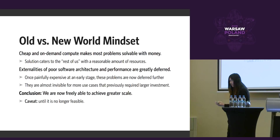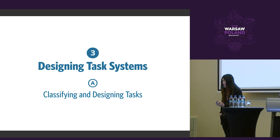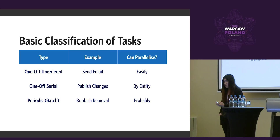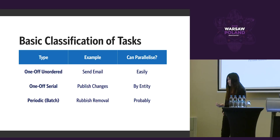Now I'll talk about the actual design of task systems. The first thing is to classify and design tasks with what we've learned. In web applications, tasks are generally either one-off or periodic. One-off means it runs once; periodic means it runs periodically. One-off tasks can be unordered or serial. A one-off unordered task — for example, sending a notification email when an order is placed — doesn't matter if the order is cancelled later; the task runs according to the arguments given at creation time. This is the easiest thing to parallelize.